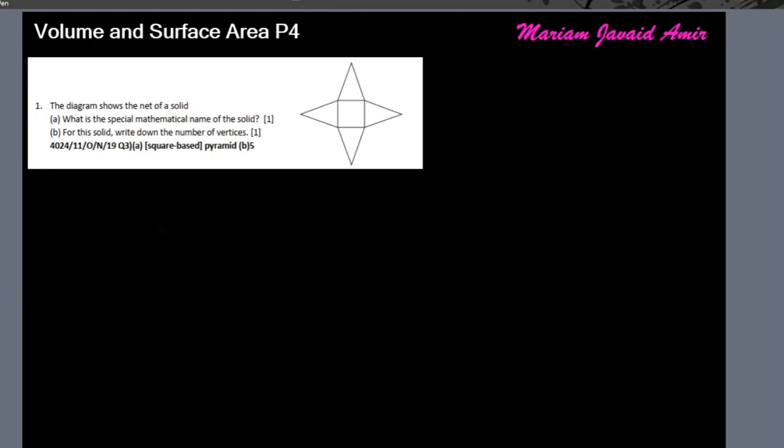Hello, we're doing a worksheet on nets of shapes, which is a subtopic of volumes and surface area. This is the first question from the worksheet which says that a diagram shows the net of a solid. What is the special mathematical name of the solid? It's a pyramid.